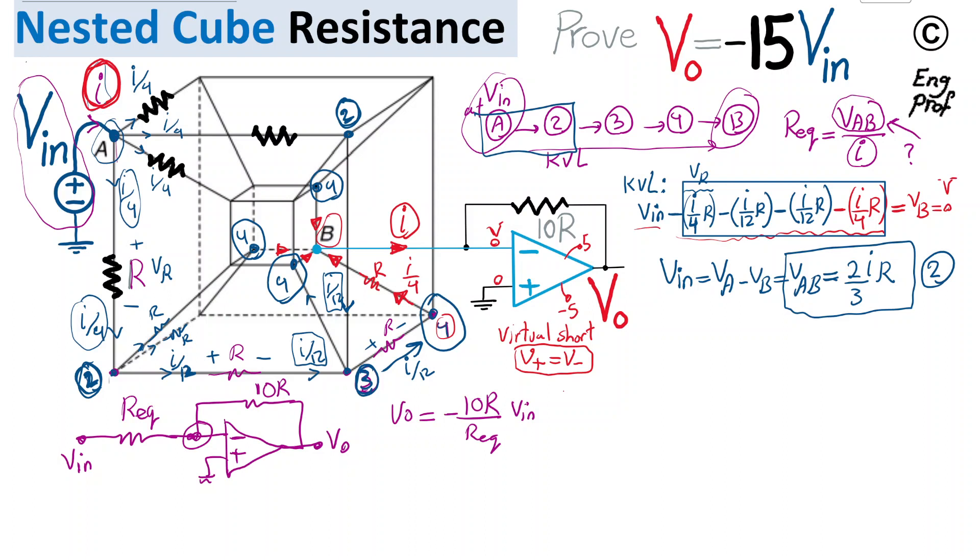I'm going to substitute that into equation 1 that we initially found for finding R-equivalent. From using 1 and 2, substituting for numerator V_AB in the R-equivalent equation, I write 2 over 3 I R divided by I. These two I cancel out. What we found is very interesting: the equivalent resistance of this double cube or nested cube network is just 2 over 3 times R.